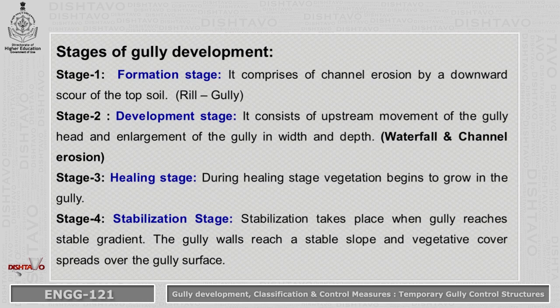Waterfall erosion occurs at the head and channel erosion at the bed of the gullies. Next is the healing stage. During healing stage, vegetation or grasses begin to grow in the gully, so the gully is stabilized at the final stage — the stabilization stage. Stabilization takes place when the gully reaches a stable gradient, the gully walls reach a stable slope, and vegetative cover spreads over the gully surface.